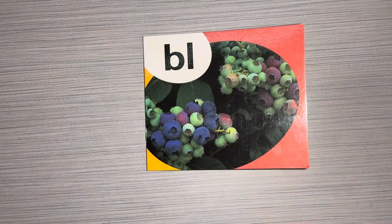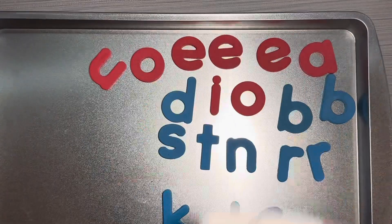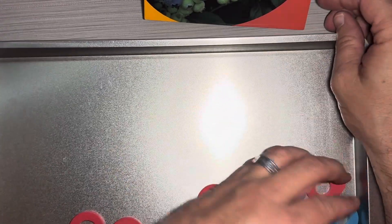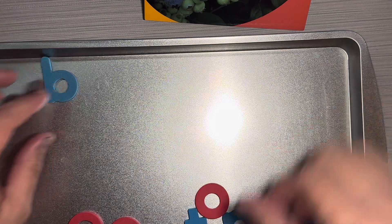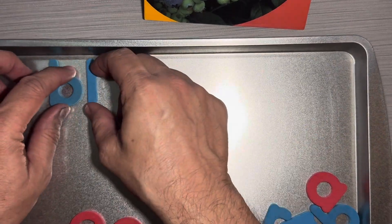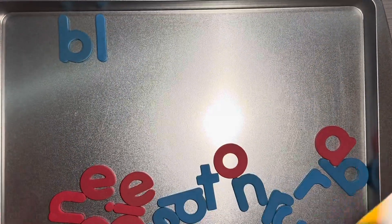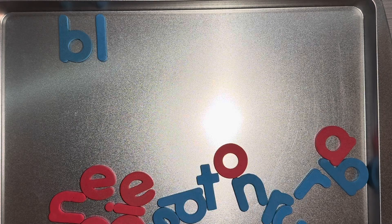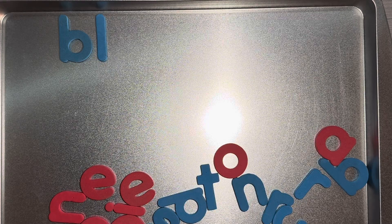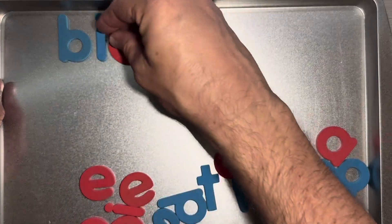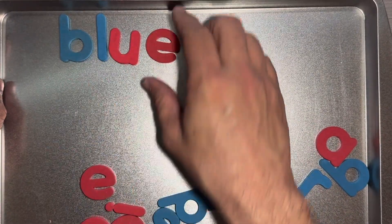Now let's get our magnetic board and let's build some words that start with the BL chunk. I always like to build my words at the top so they're separated from all my other letters that I may not be using at the moment. Bl, blue.